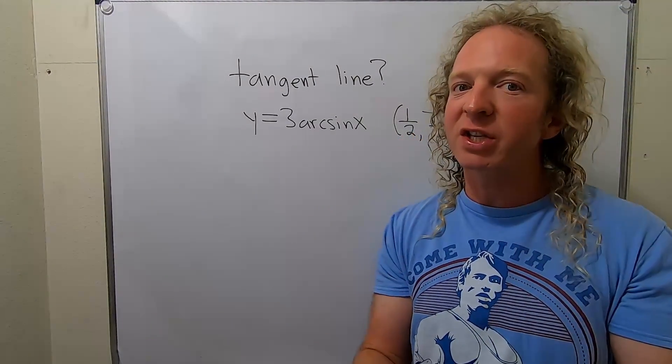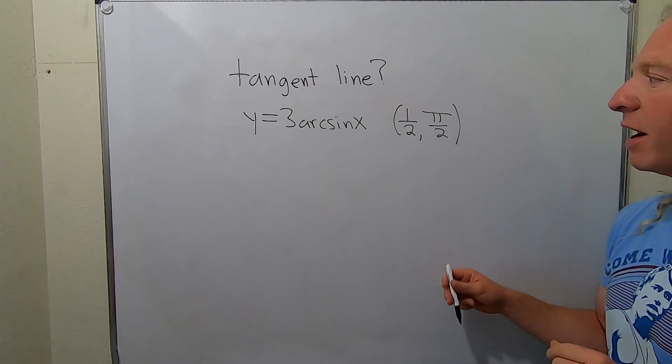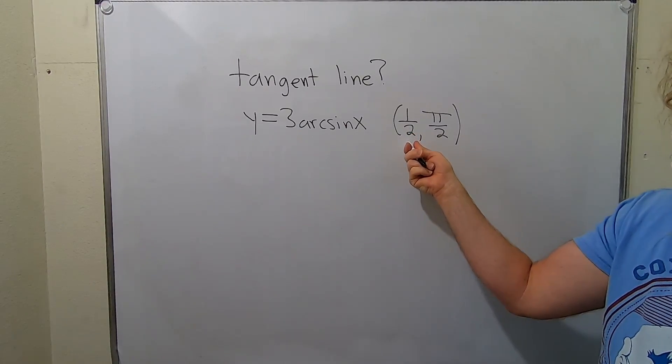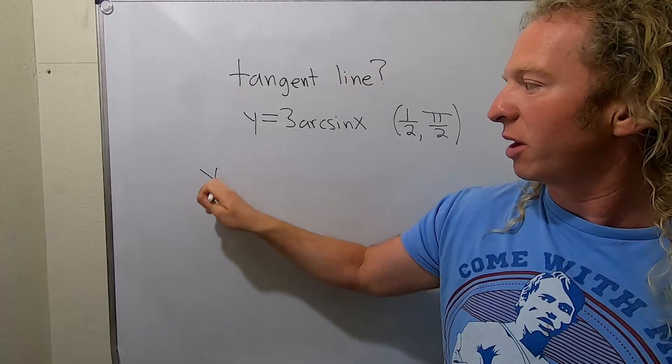The slope of the tangent line is the derivative. So we have to start this problem by finding the derivative of this function and then plugging in our x value to actually find the slope. So step one is find the derivative. So y prime.